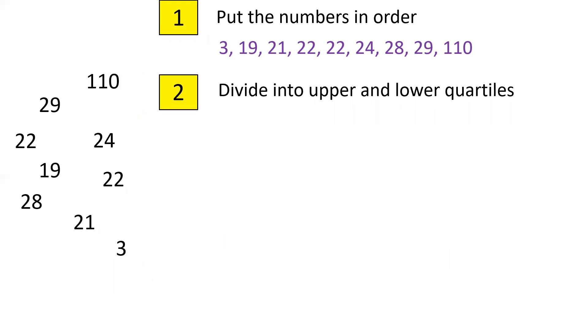Second thing we do is we divide the numbers up into an upper quartile and a lower quartile. Here we have nine numbers, that's an odd number of numbers so we have to get rid of the middle number. We cross out 22 as it's in the middle. If you had an even number of numbers, supposing you had eight numbers here, simply draw a line down the middle and divide them into four on one side and four on the other.